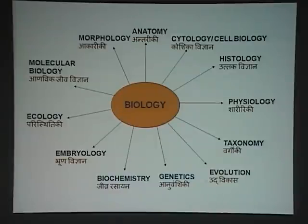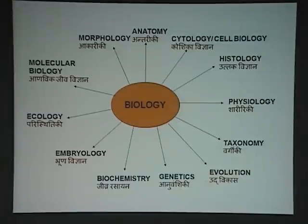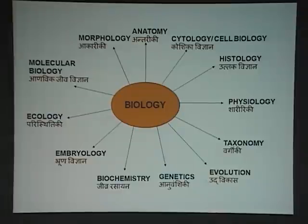In the order Primates, you might have seen cows, dogs, horses — all these are mammals, but they have different orders. Carnivora, Cetacea, elephant from Proboscidea, rabbit from Lagomorpha, rats from Rodentia. These are different orders. Human is Primates.